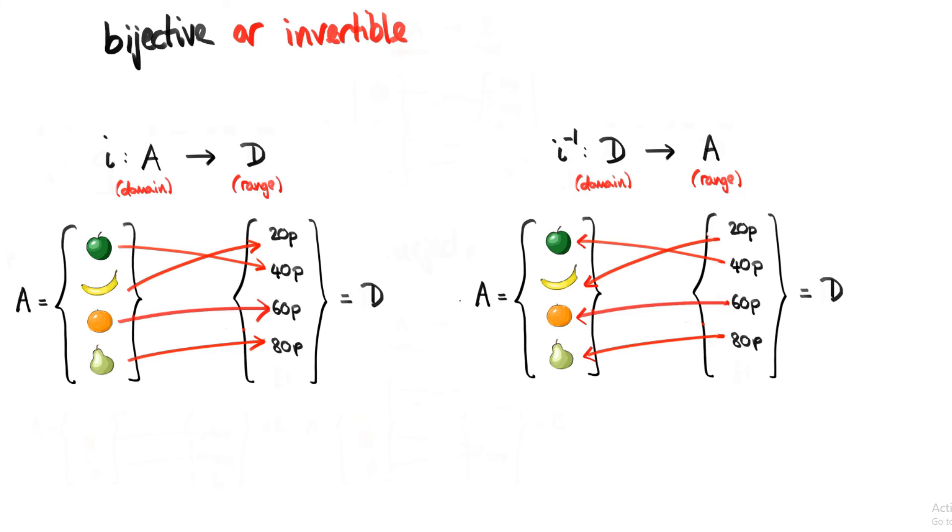You can see why it's necessary for the bijective function to be both injective and surjective. Because if it wasn't injective, then when we try to flip these arrows, we're going to have two arrows pointing out of a single element in B. Then i inverse wouldn't be a proper function.